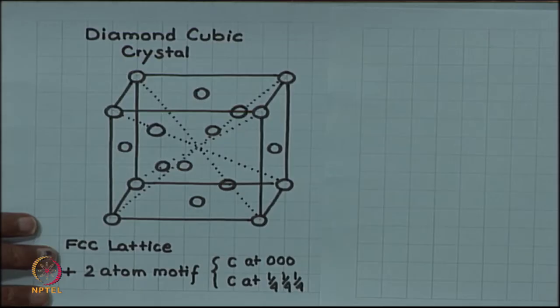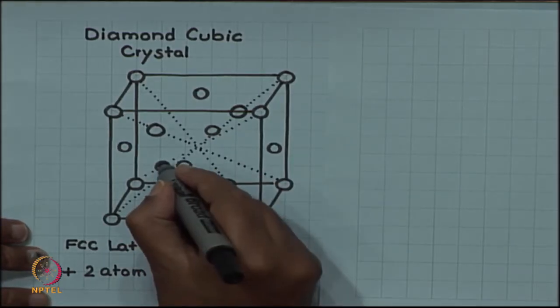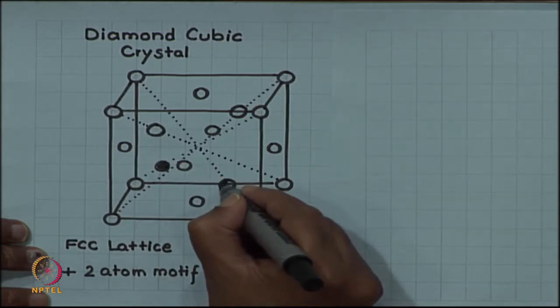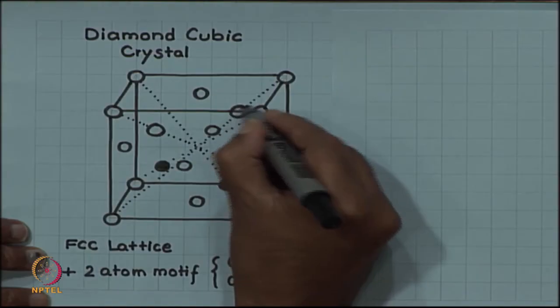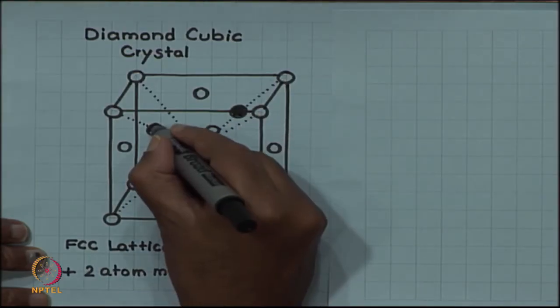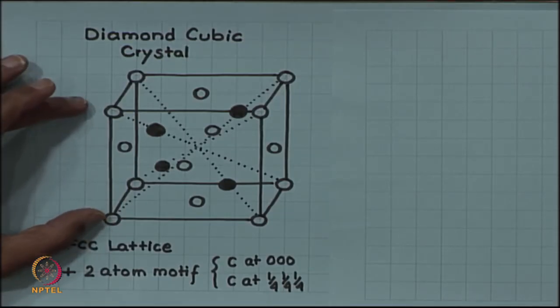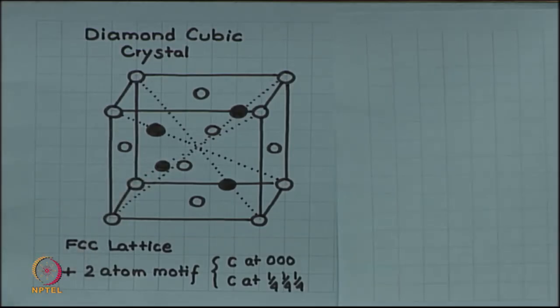These 4 inside carbon atoms, although all of them are carbon, let me shade the body diagonal ones just to emphasize that they are located on the body diagonal. Both of them are carbon. In diamond cubic crystal, diamond is an element so all atoms are of the same type, but some are located on the face centered cubic sites and others on these body diagonals.